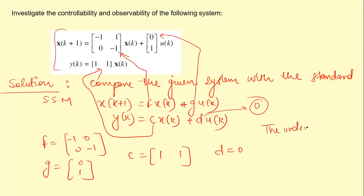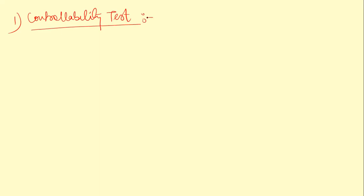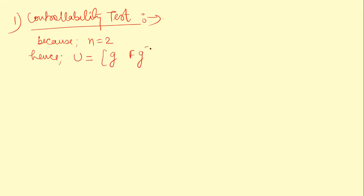The order of the system n is 2, because F is a 2×2 matrix. For the controllability test, since n = 2, the controllability matrix U = [G, FG].